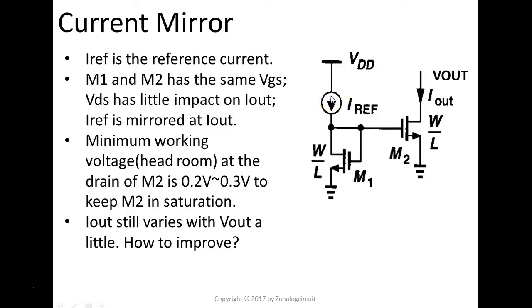We have M1 here at the bottom, and then M2 is on the other side. Since M1 and M2 have the same VGS, as we mentioned before, VGS has a huge impact on the IDS current, while VDS has very little impact on the Iout here.